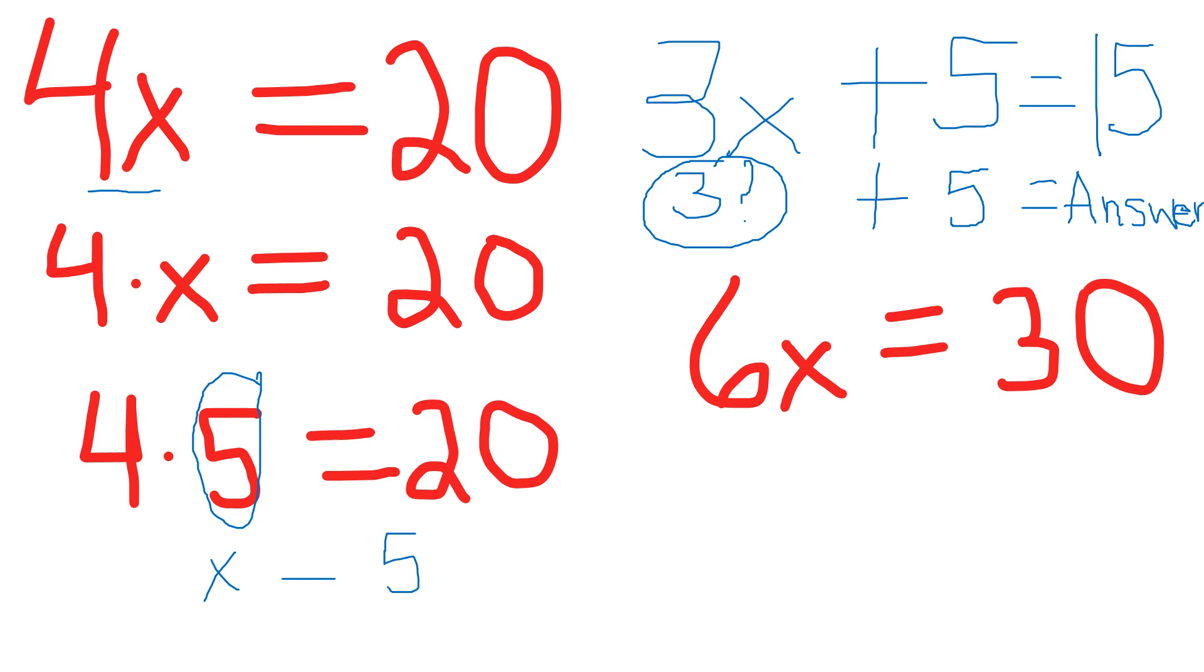But the other part of the problem is that this 4 and this x next to each other means that this number multiplied by this variable x, all of this has to come out and equal 20.